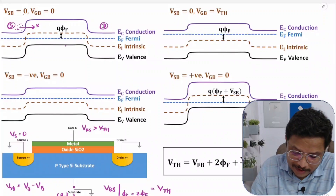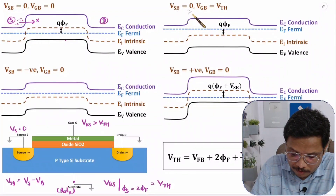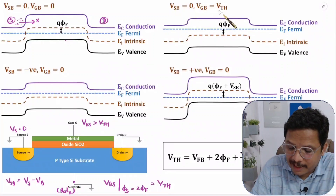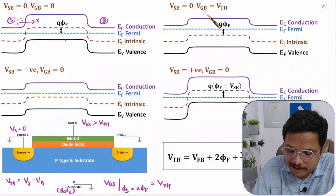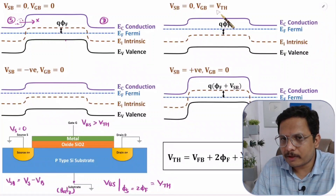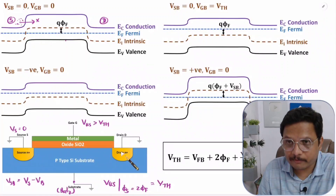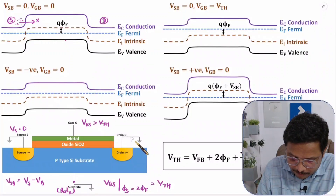In the second scenario, VSB equals zero, meaning body voltage is zero, and VGB equals VTH — we are applying gate voltage equal to threshold voltage. When gate voltage equals threshold voltage, there will be the start of an inversion layer between source and drain, allowing the possibility of current flow between them.